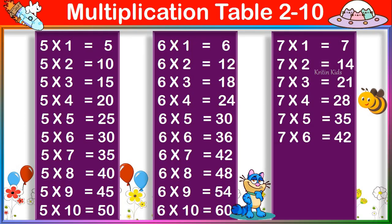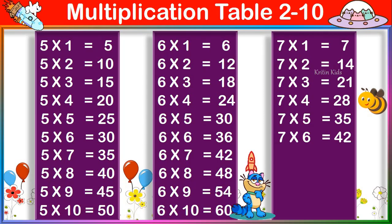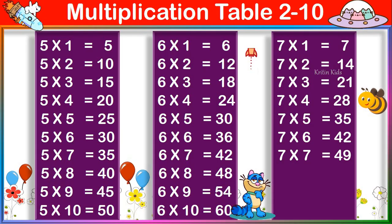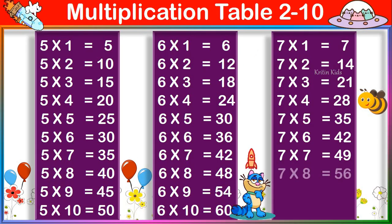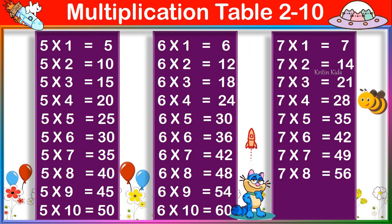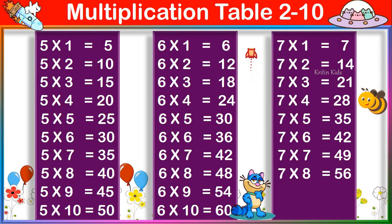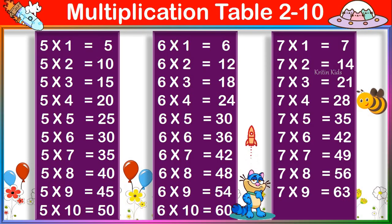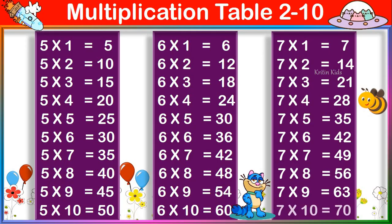7 six's are 42, 7 seven's are 49, 7 eight's are 56, 7 nine's are 63, 7 ten's are 70.